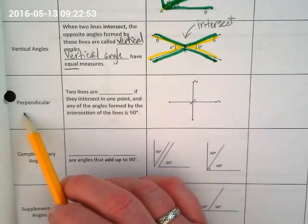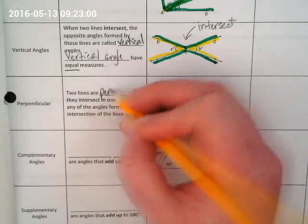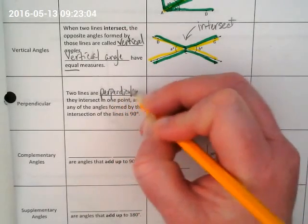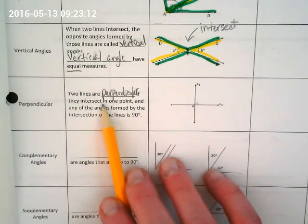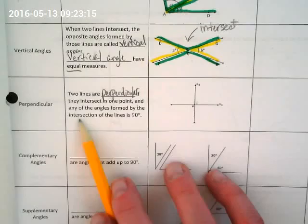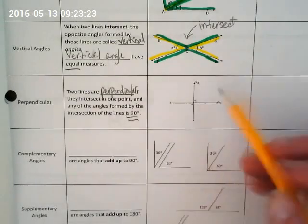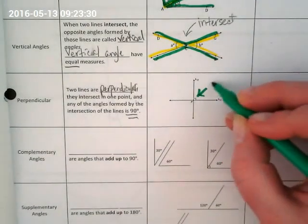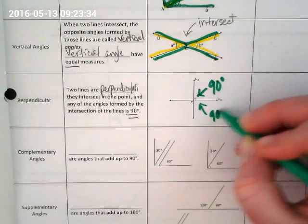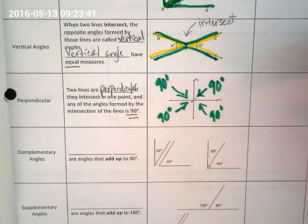Our next vocabulary is perpendicular. Everybody say perpendicular. Perpendicular. Two lines are perpendicular. And I made this space too small. My writing always is too big. Two lines are perpendicular if they intersect in one point and any of the angles formed by the intersection of the lines is 90 degrees. Think of this as a plus sign. A plus sign is perpendicular. We see the mark there for a 90 degree angle. Do you guys see it down there? The little teeny one? All of these angles are 90 degrees. That's what makes this perpendicular. And they intersect right there in the middle.